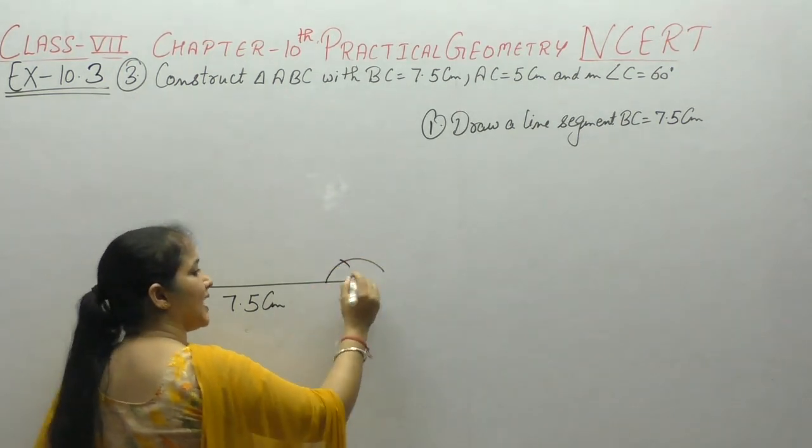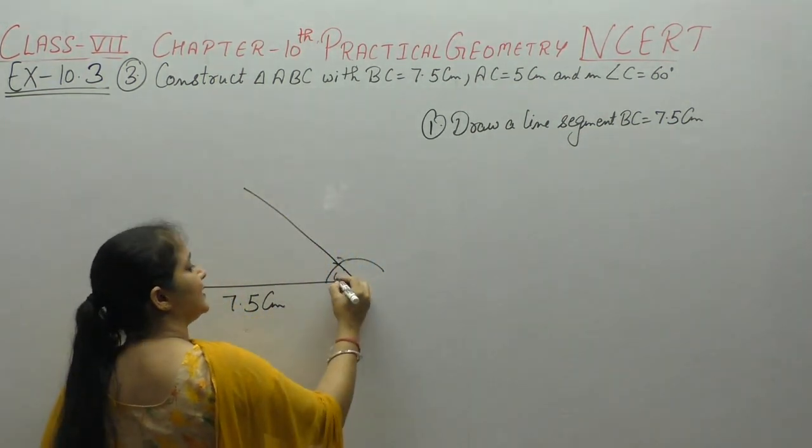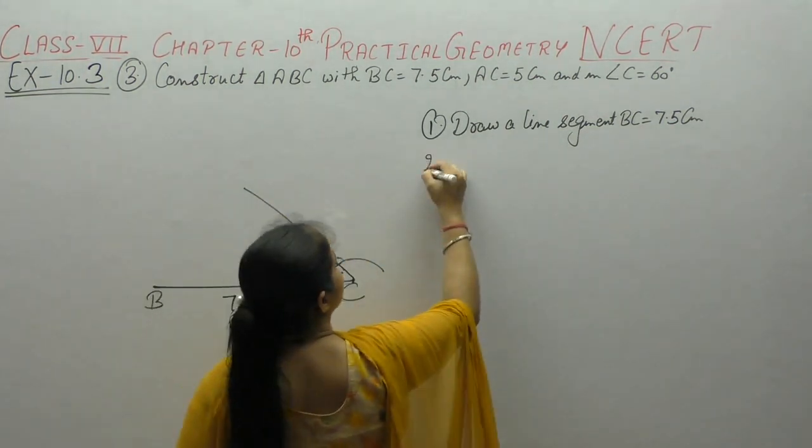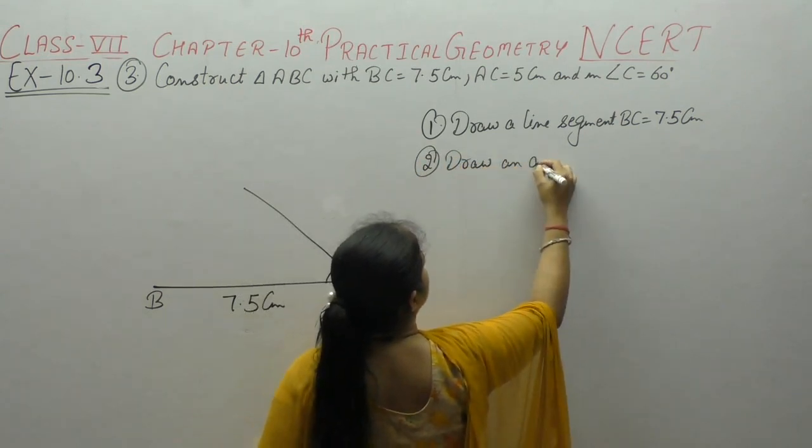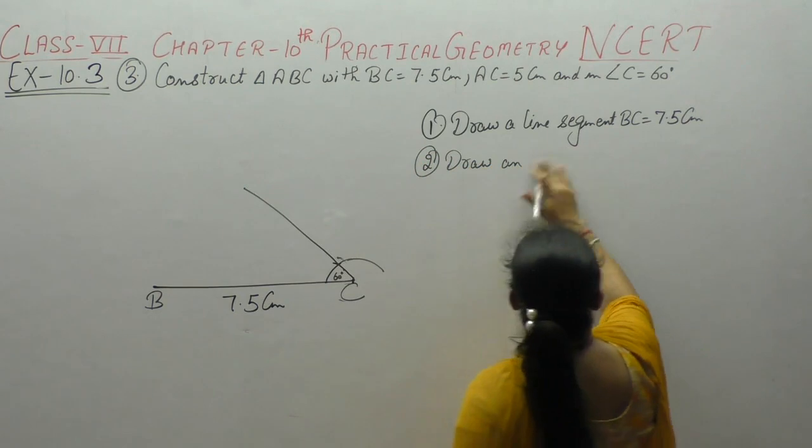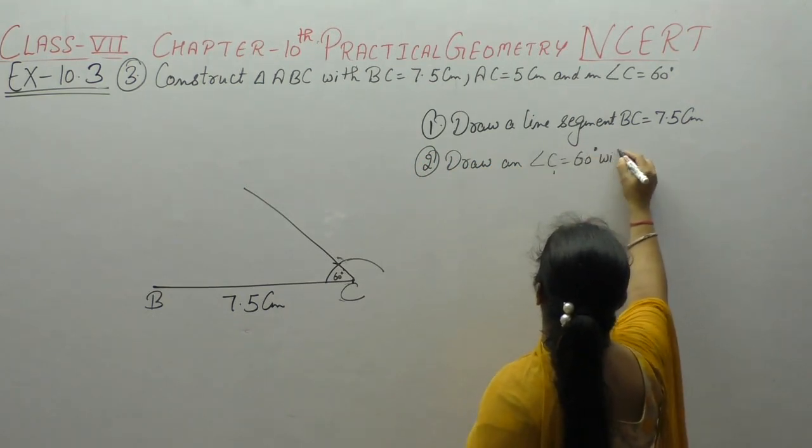Here put first arc, which is first start. Draw an angle C is equal to 60 degree with the help of compass.